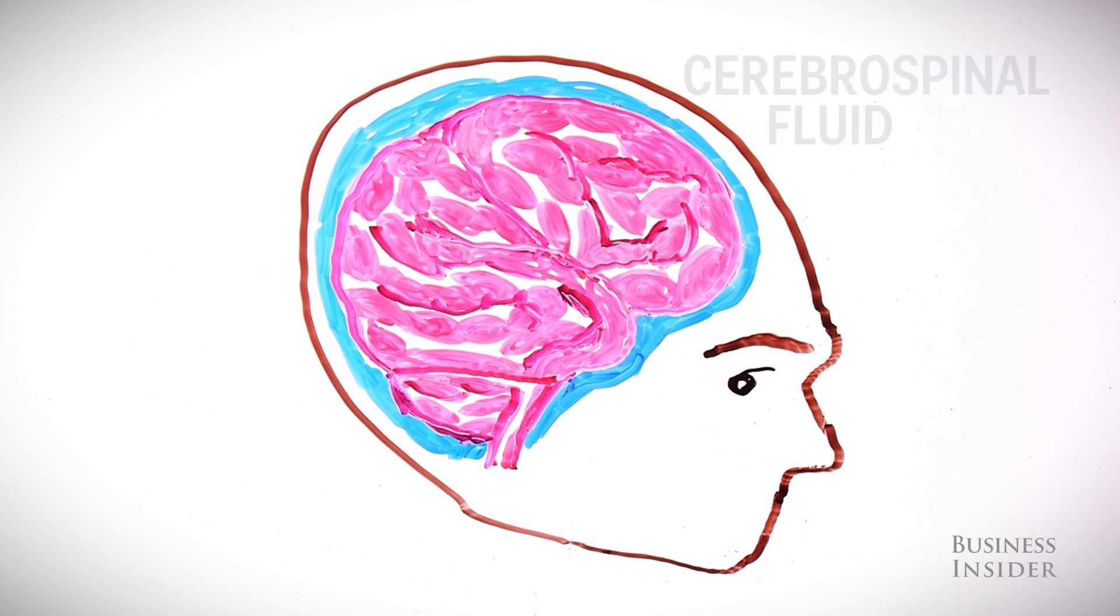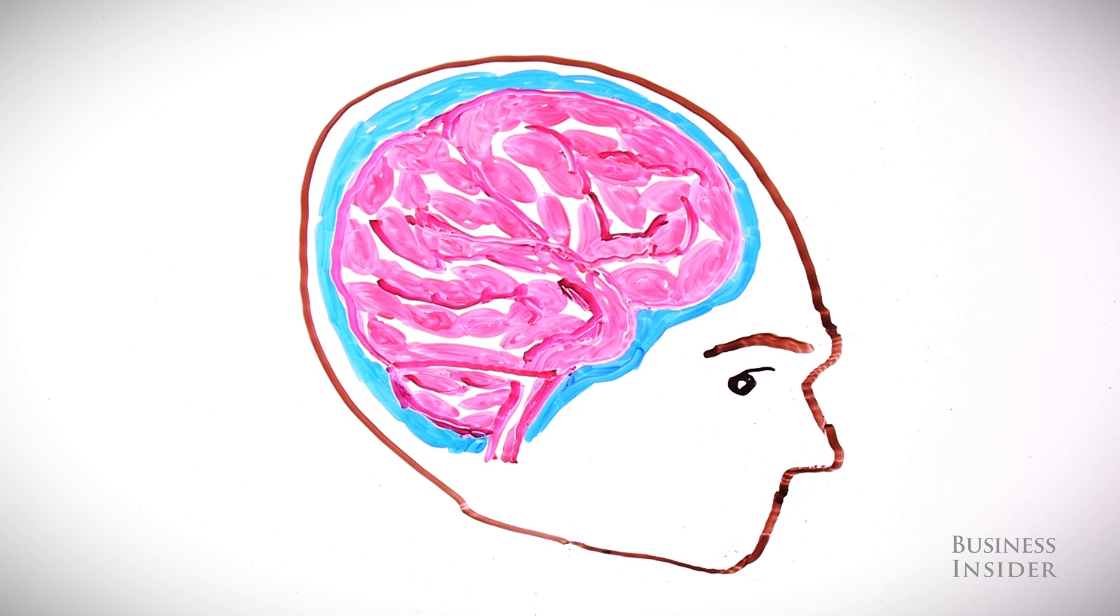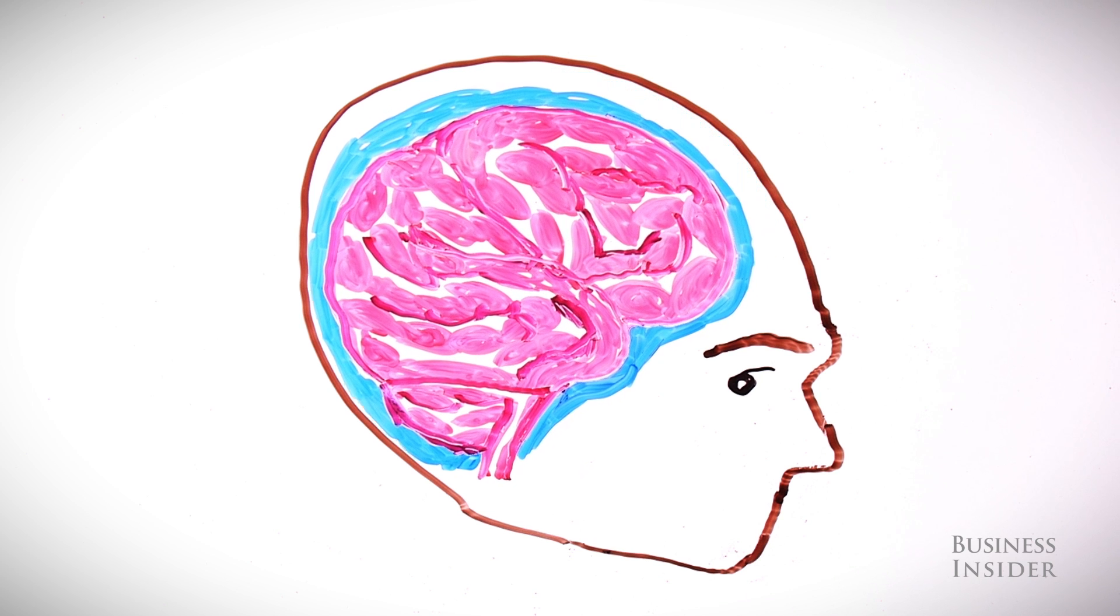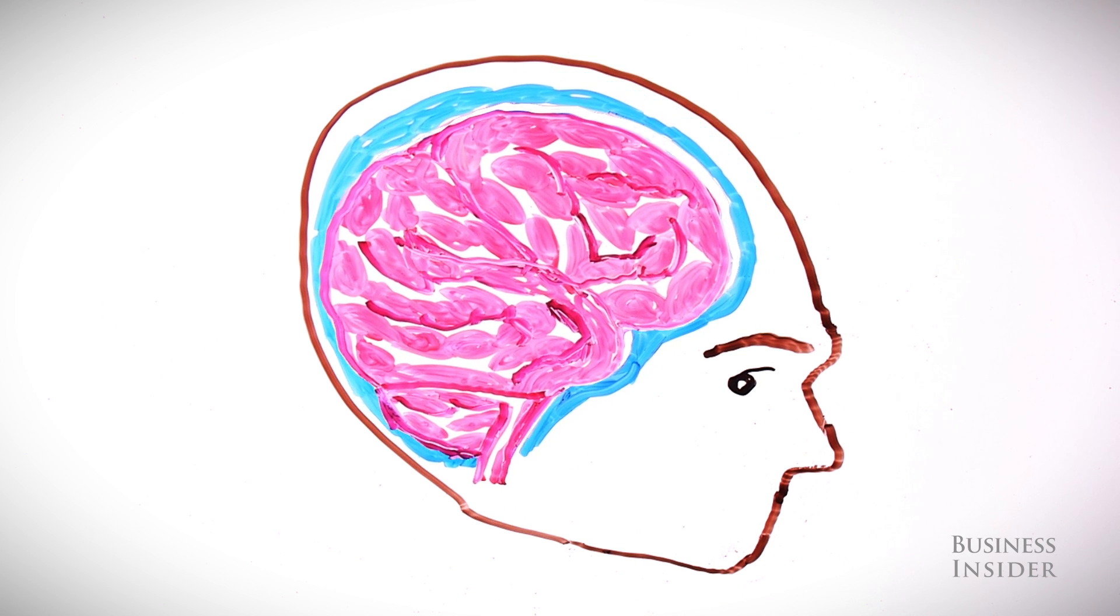The brain sits in cerebrospinal fluid in your skull. The fluid can help to absorb small impacts, but a significant knock on the head or whiplash motion can cause your brain to hit back and forth on the walls of the skull.